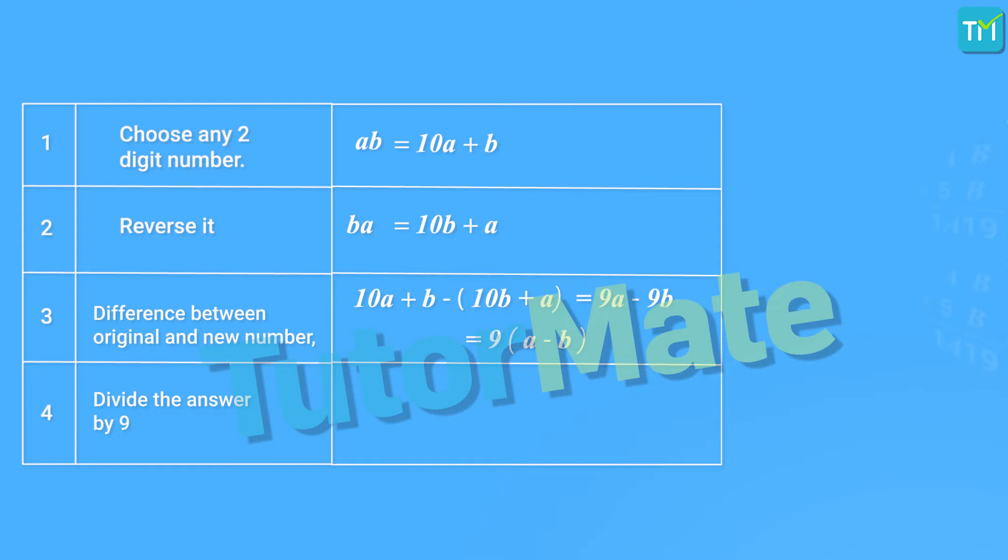So, moving on, we can see that the difference is a number which is a multiple of 9. So, if we divide it by 9, it will give us the remainder as 0, irrespective of the values of A and B.